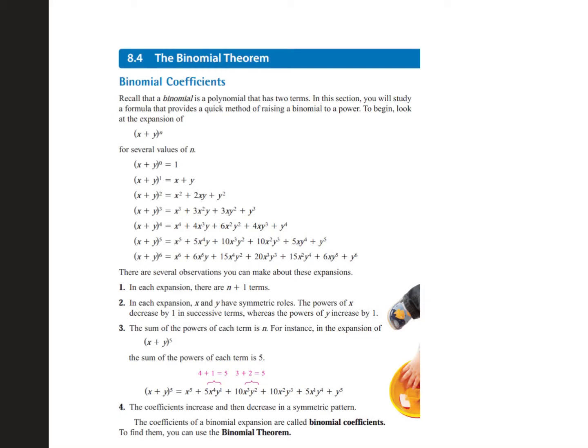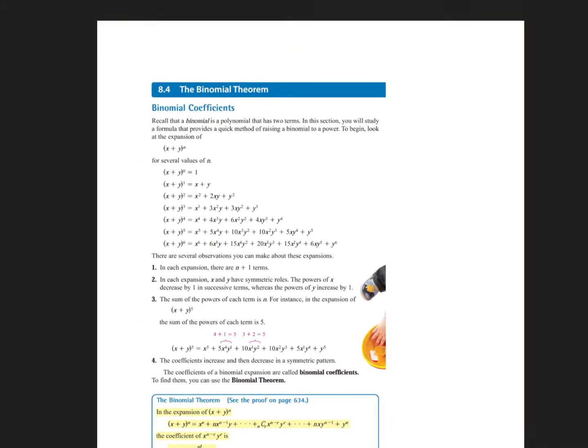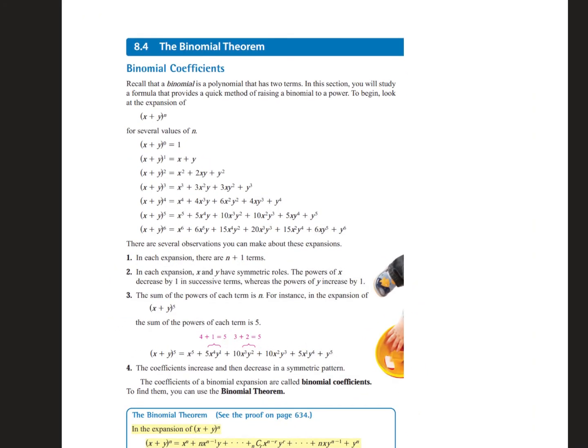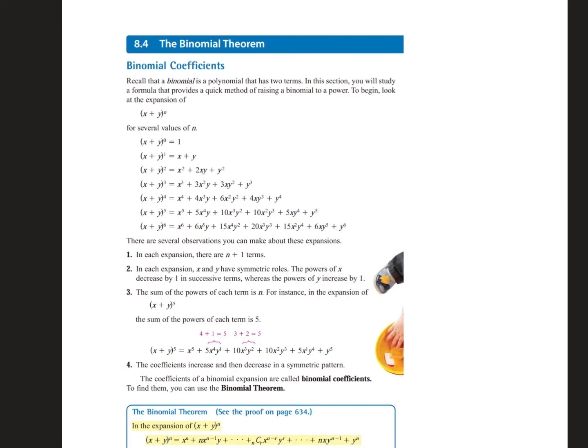Alright guys, we're going to talk today. Section 8.4 is called the Binomial Theorem. Binomial means two terms. You guys have seen this before — we talked about this in Algebra 2. If you don't remember it, that's okay. We're going to talk about finding the binomial coefficients, it's just a formula and really easy to do. Then we're going to talk about expanding binomials using Pascal's Triangle.